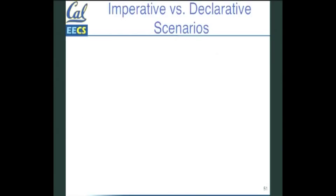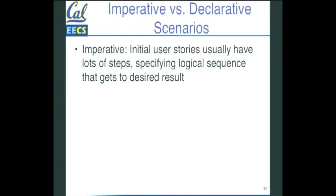The imperative versus declarative is a little more interesting. Typically the examples we've been getting have lots of steps, because you're kind of writing down the sequence of things that's supposed to happen. And as we look at this, you'll see there are so many steps — isn't there some better way to do that?